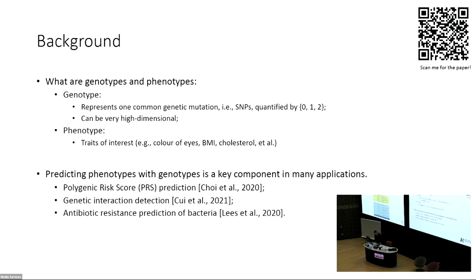This prediction problem is a key component in many genetics applications. For example, we could generate a polygenic risk score for a specific disease, or find interaction effects between two genes to recover the mechanism of a certain disease. Also, in bacterial genetics, we could predict antibiotic resistance for a new bacterium given its genome information.